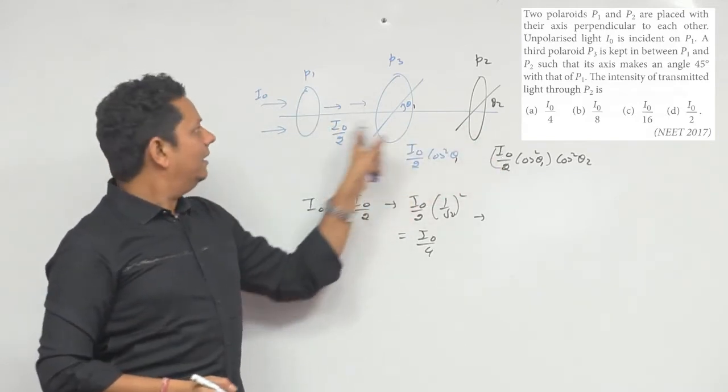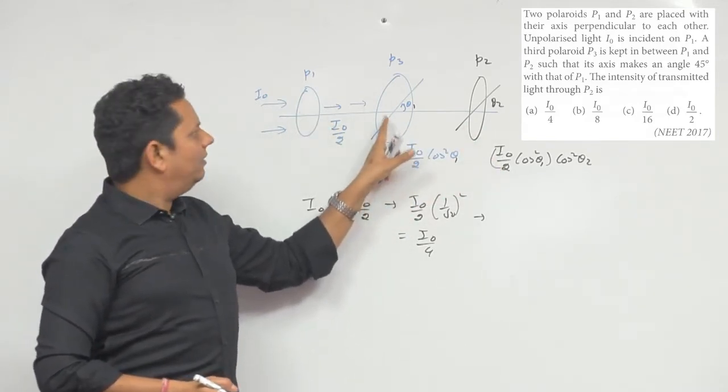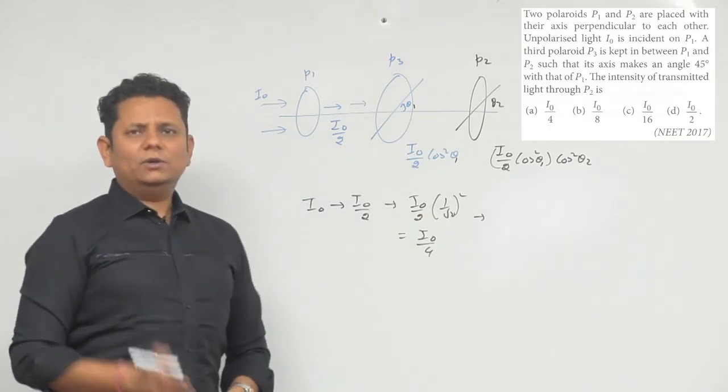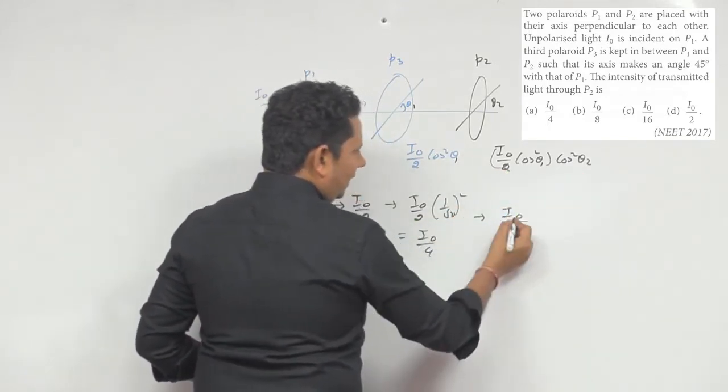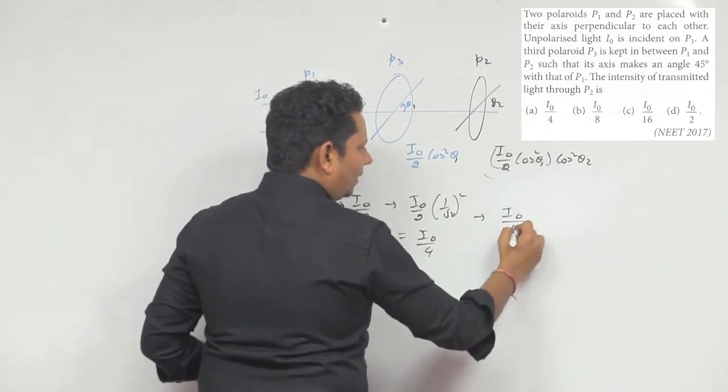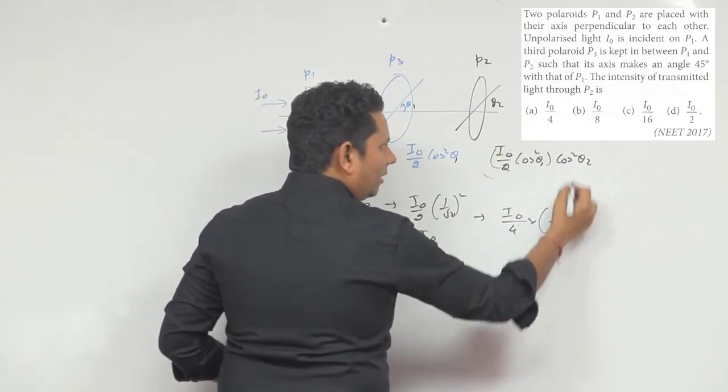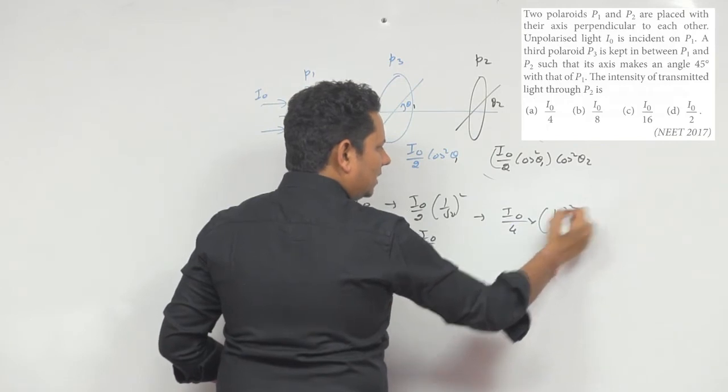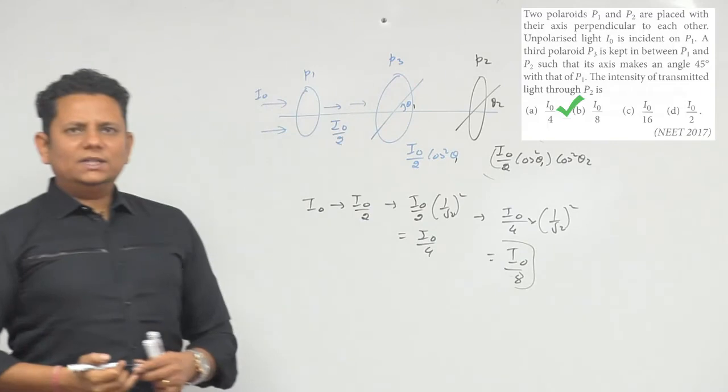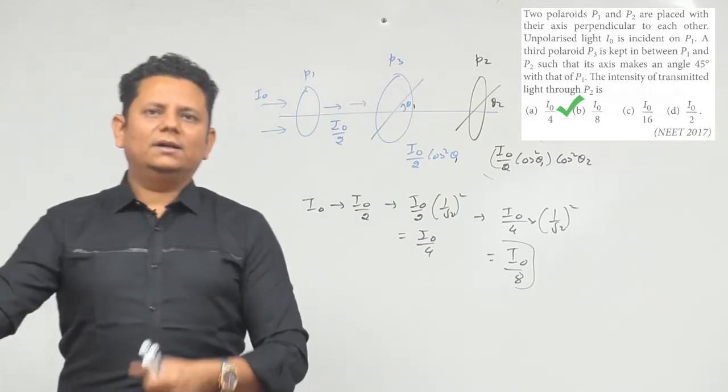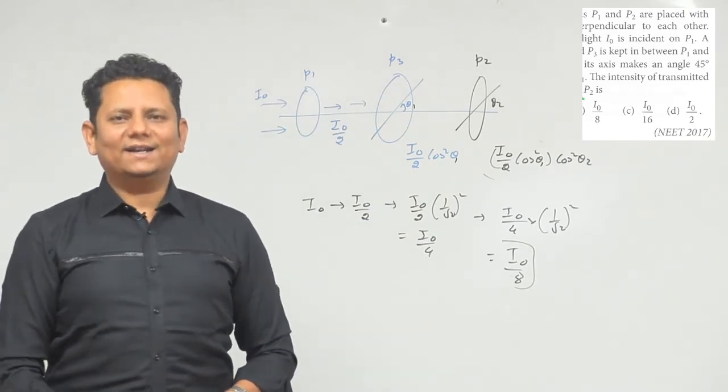Ab jab yeh third polarizer se jaegi, pehle aur iske beech mein 90 degree hai aur in dono ke beech mein angle 45 degree hai, yani ki theta 2 ki jo value hai wo bhi 45 degree ho gayi hai. To yahan par jo aapke light aegi woh hai ki I not, iski value I not by 4 hai multiplied by cos square 45. Yeh phir ban jaega, to iska square yani ki final value aa gayi I not by 8. To based on this, option number B, I not by 8 would be the right answer.